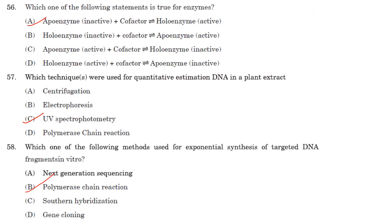Which of the following statements is true for enzymes? Apoenzyme (inactive) plus cofactor gives holoenzyme (active). Answer is option A.